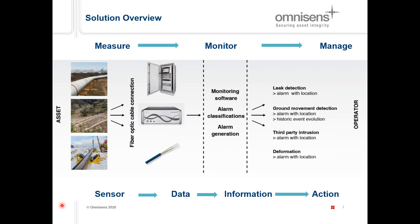We offer a complete solution, starting with the cable and interrogator at the asset — shown here as a pipeline. We measure temperature, strain, deformation, and vibration. Essentially we transform, using a fiber optic cable, information from a sensor into data. We then process this data through monitoring software, perform alarm classification and generation, and communicate over SCADA to an end user. We transform data into information, feeding it to the operator so someone can take action based on what was originally measured by the cable.